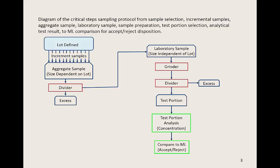This is the diagram of the critical steps sampling protocol, from sample selection to sample preparation and analysis. Let's start with the lot. Once you have defined your lot, the first part of the sample selection process is to take many incremental samples from many locations in the lot. Combine these incremental samples to form the aggregate sample. The aggregate sample size is dependent on the lot size — large lots yield large aggregate samples, small lots yield small aggregate samples — and the aggregate sample should be at least as large as the required laboratory sample.